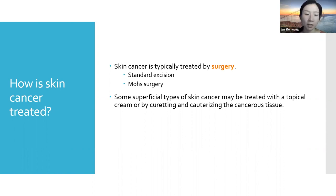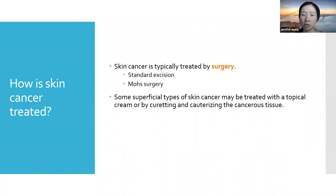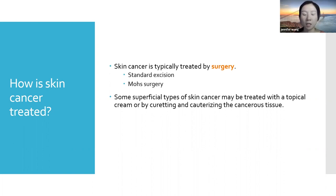For cancers that are more advanced, additional treatment beyond surgery may be needed. For melanoma skin cancers that are deeper or more aggressive appearing, there may be a secondary procedure called a sentinel lymph node biopsy, in which the surgeon removes a lymph node to check that cancer hasn't moved beyond the skin. For squamous cell cancers that have also become more advanced or deeper in the skin, a course of radiation may be needed to ensure all cancer cells are fully removed. These situations don't come up often, and if a skin cancer is treated early when it's small and hasn't had a chance to progress, you may not need these additional treatments.